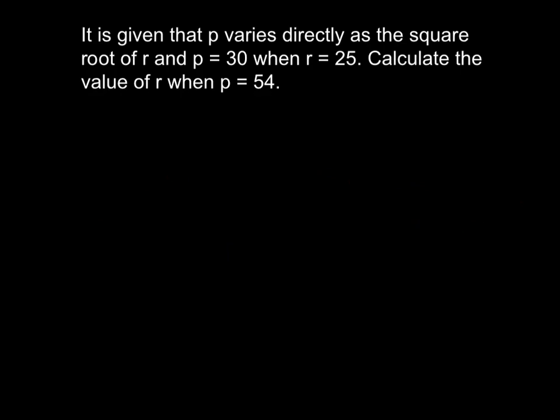Okay, it's given P varies directly as the square root of R. So from here, I can roughly understand P varies directly as the square root of R. This is square root of R. So P varies directly.